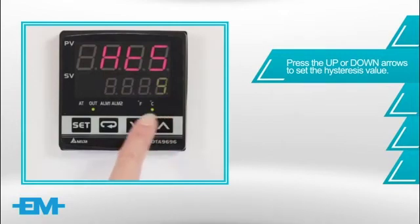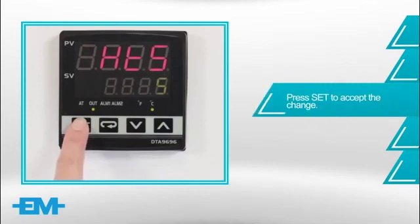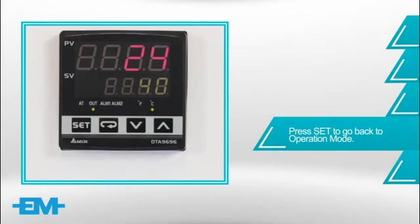For our video, we are using 5 degrees. Press set to accept the change. Press set to go back to operation mode.